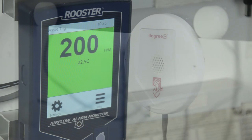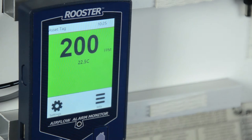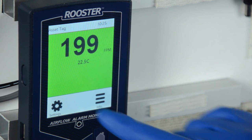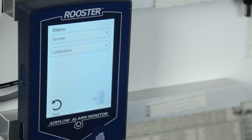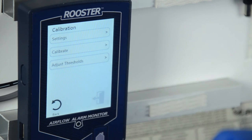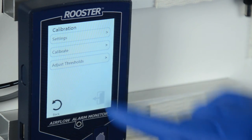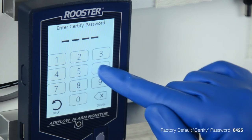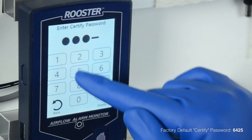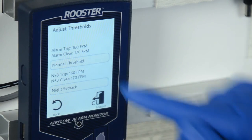To modify threshold values in the future without recalibrating your unit, simply return to the home screen, then enter the settings menu, calibration, then select adjust thresholds. This will give you the chance to redefine the alarm trip and clear points for either normal or night setback modes of operation.